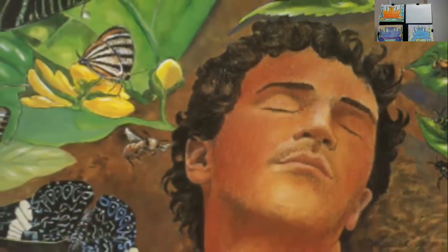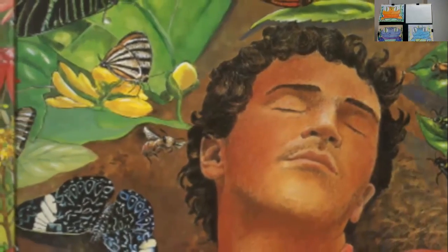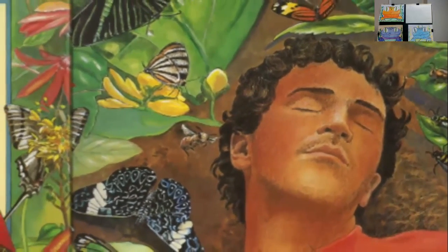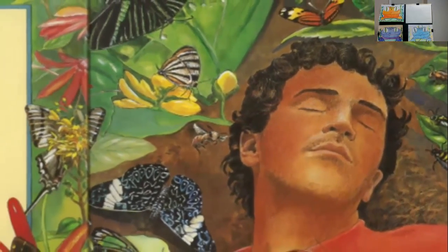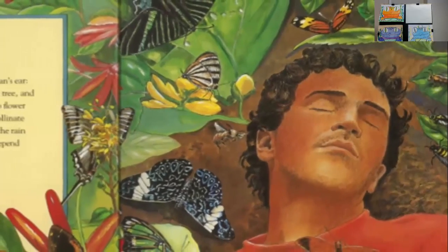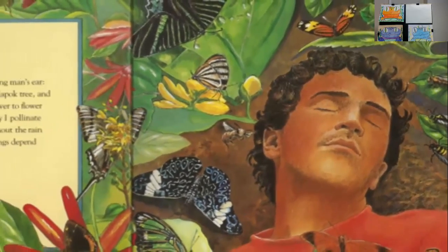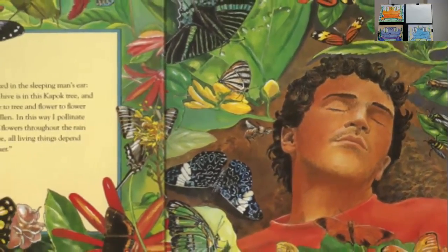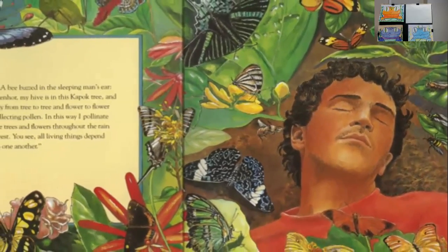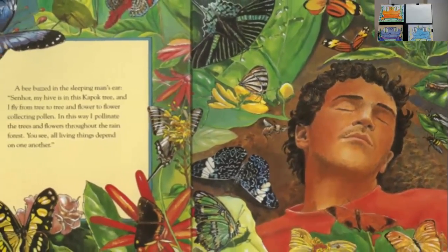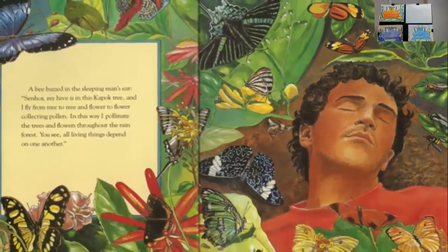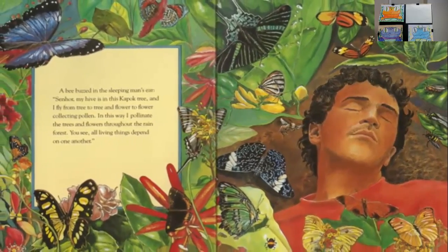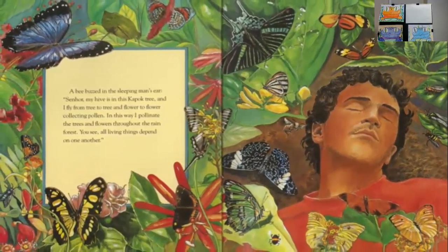A bee buzzed in the sleeping man's ear. Senor, my hive is in this Kapok Tree, and I fly from tree to tree and flower to flower collecting pollen. In this way, I pollinate the trees and flowers throughout the rainforest. You see, all living things depend on one another.